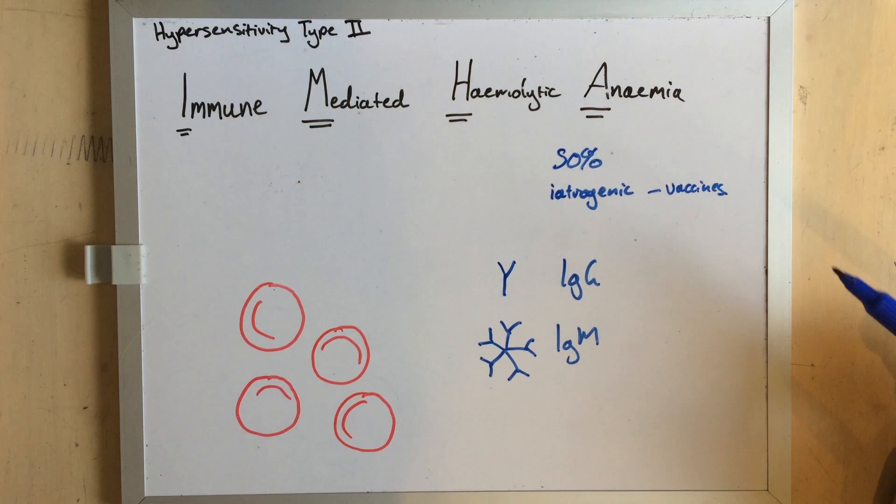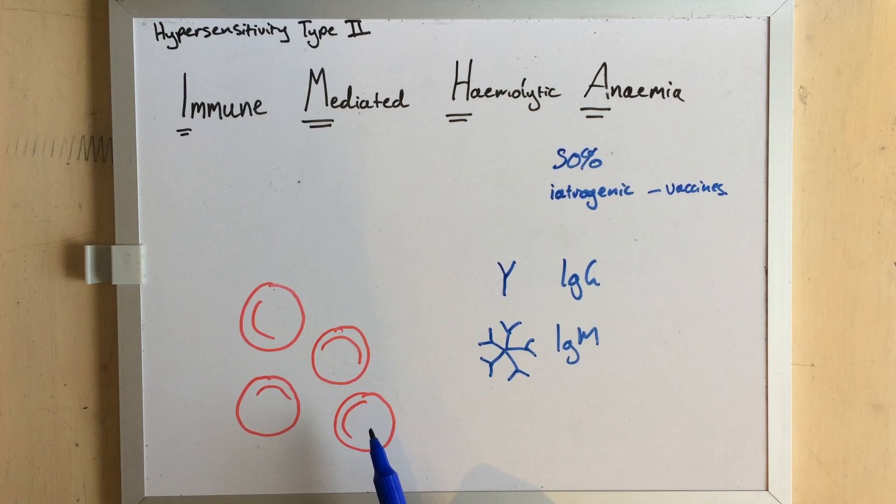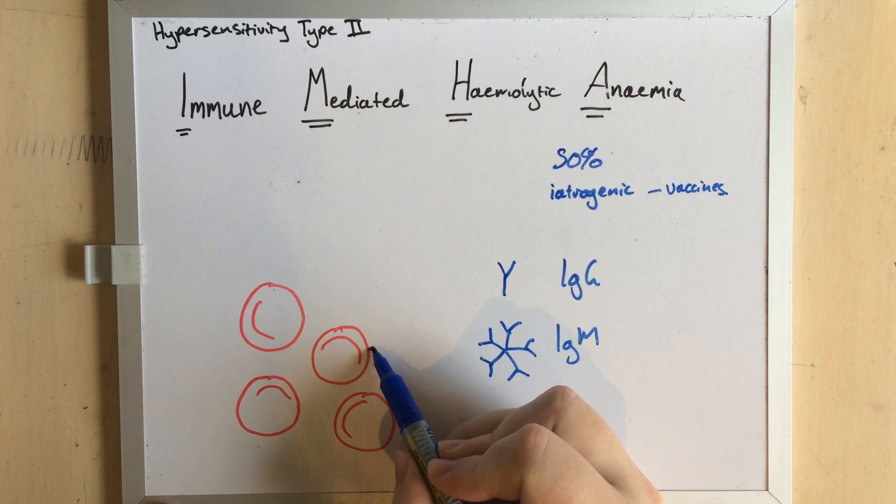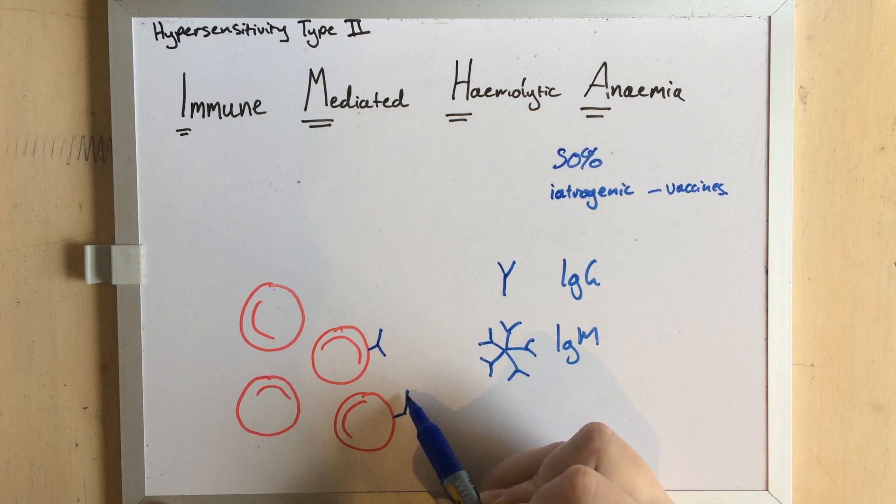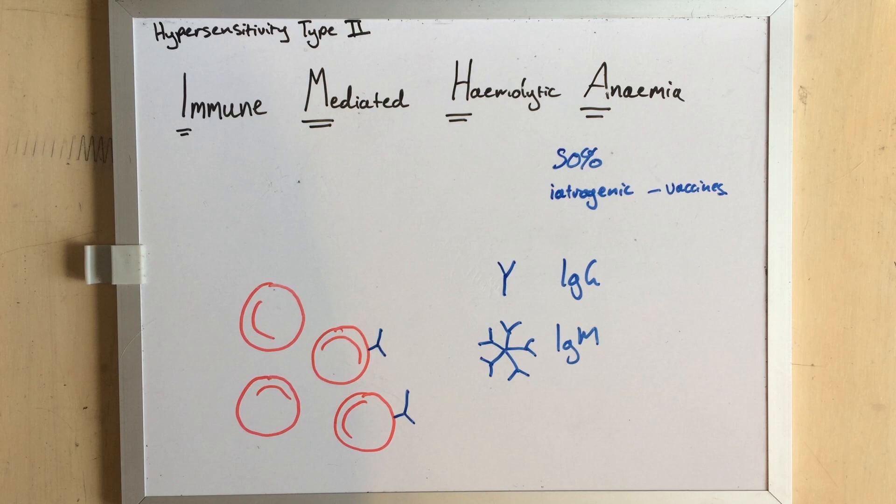In IMHA and hypersensitivity type 2 reactions in general, IgG and IgM molecules are targeting antigen on the surface of the red blood cells. These molecules bind to the red blood cells and either activate the complement system, which is more complicated than I intend to go into but makes the cells pop, or flags them for other immune system cells to phagocytose. That's a fancy way of saying that the other cells eat the tagged red blood cells.